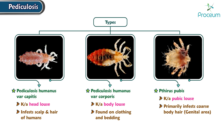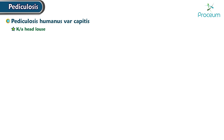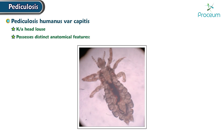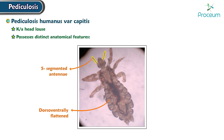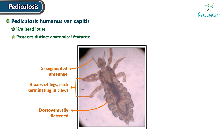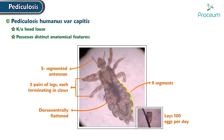Let's take a closer look at the different types, starting with Pediculosis humanus var capitis. It is commonly known as the head louse and possesses distinct anatomical features. Its body structure is dorsal-ventrally flattened. Its head is marked by a pair of five-segmented antennae. Its thorax consists of three pairs of legs, each terminating in claws. Its abdomen comprises nine segments. As for its reproductive behavior, it lays 100 eggs per day.